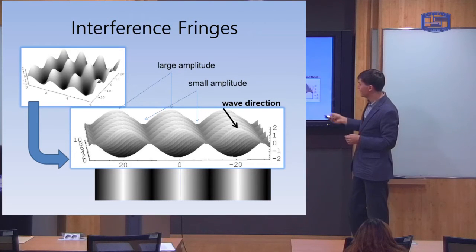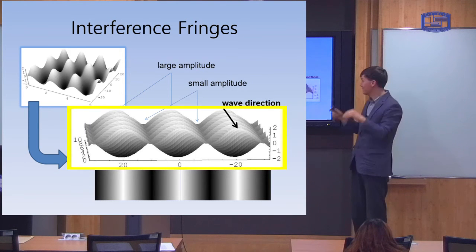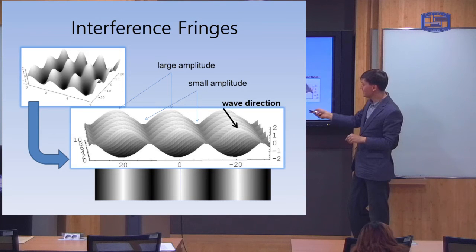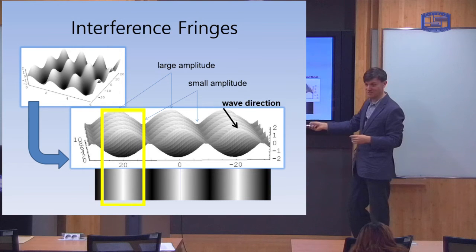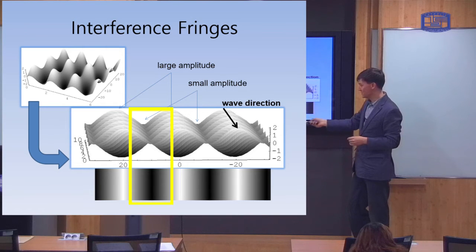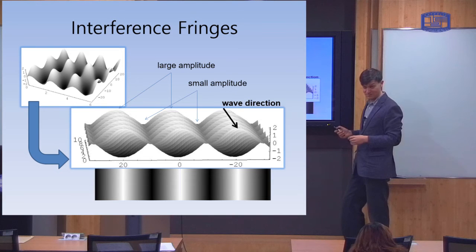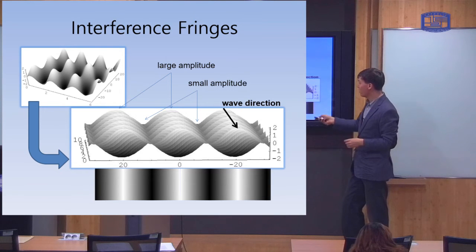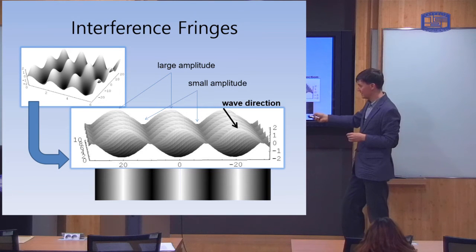What does this look like? If you imagine looking at the wave head on, you see something like this: there are places where the light wave is very strong, which you would see as a bright patch of light, and there are places where the light wave is very weak, which you would see as a dark patch. So when you look into the interferometer, what you see are patterns of light and dark, corresponding to where the waves interfere constructively and destructively.